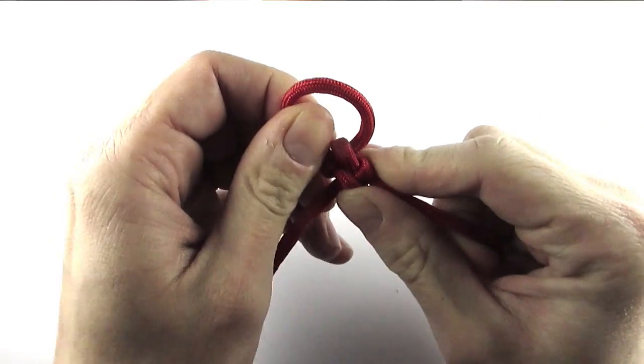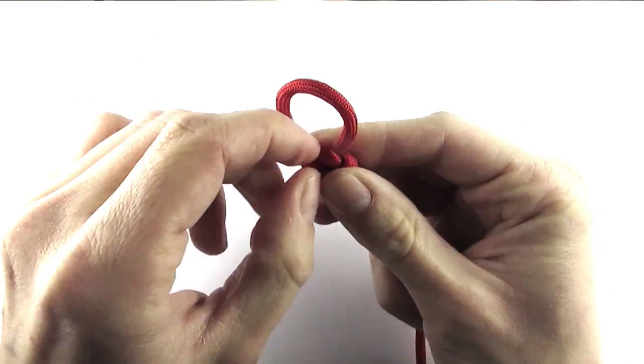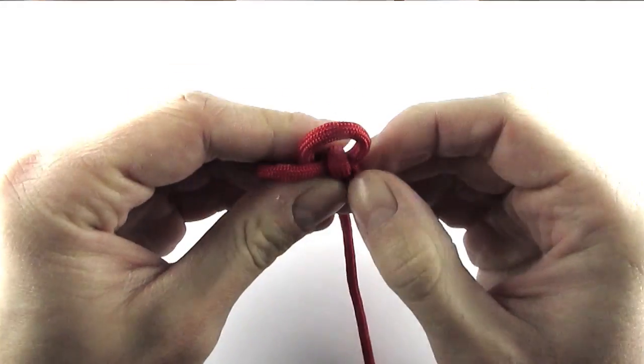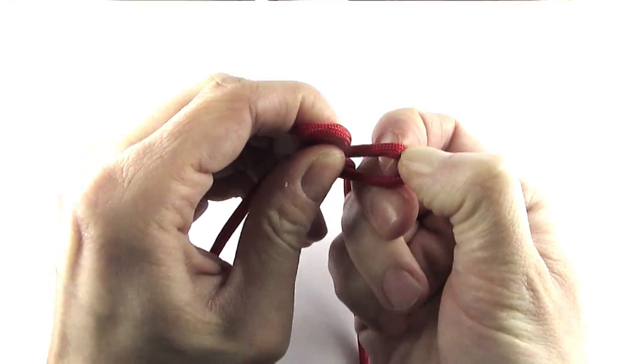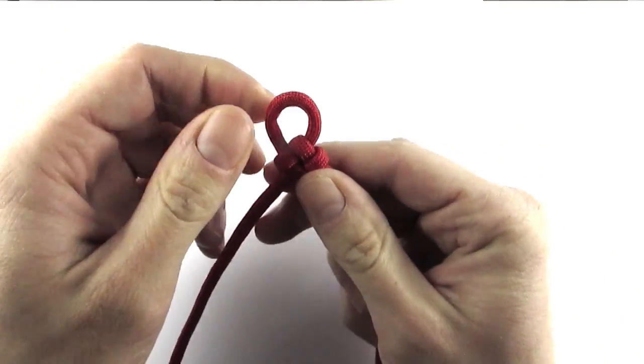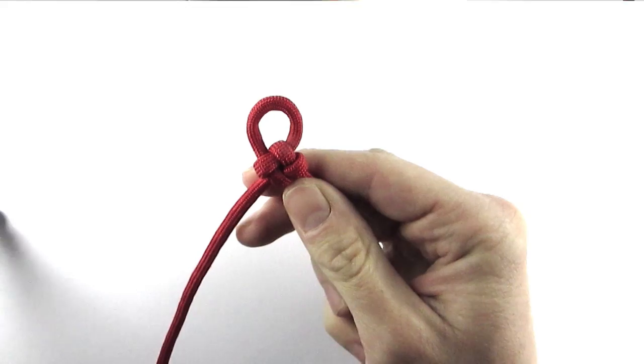Like this. As you can see, the top loop is a bit big so I'm going to remove some more cord out of it. And there, we have our first cross knot.